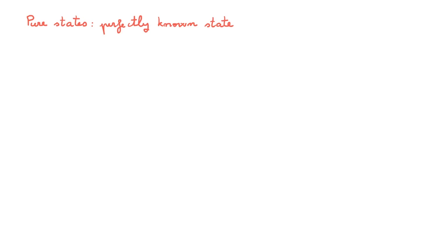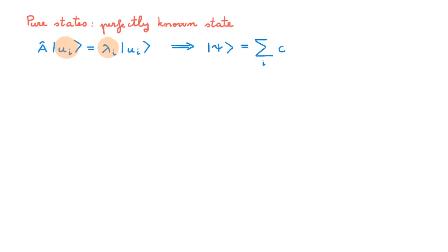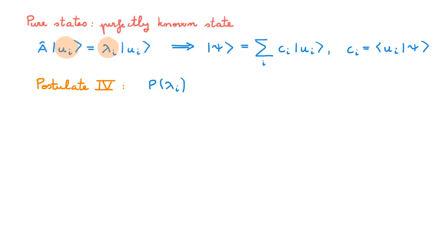It is important to understand that in quantum mechanics full knowledge of a state has a probabilistic dimension. For example, imagine we have an observable A with its eigenvalue equation given by this. In this equation the u_i are the eigenstates and the λ_i are the eigenvalues. We can always write the pure state ψ of the system in the basis spanned by the u eigenstates, and the expansion coefficients c are given by the bracket between u and ψ and are called the representation of ψ in the u basis. From postulate 4 of quantum mechanics we know that when we measure property A, the probability of obtaining eigenvalue λ_i as the outcome of the measurement is given by the absolute value of c_i squared, where for simplicity I'm assuming a non-degenerate eigenvalue.